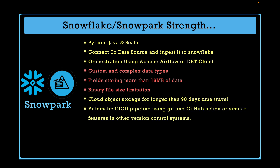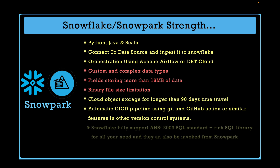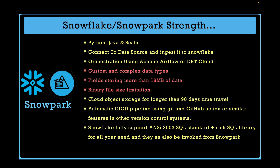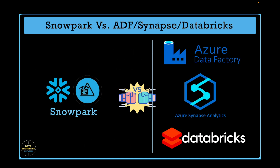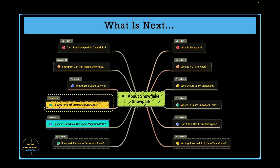You can also automate your CI/CD pipeline using Git and GitHub Actions or similar features in other version control systems. Snowflake fully supports the ANSI 2003 SQL standard with a rich SQL library, which can also be invoked from Snowpark APIs. Snowflake also provides Snowpark-optimized virtual warehouses for large machine learning workloads. This chapter covered key features of Azure Data Factory, Azure Synapse Analytics, and Databricks, and explored whether those features can be built using Snowflake/Snowpark, giving you a clearer understanding of what is feasible in the Snowpark environment.